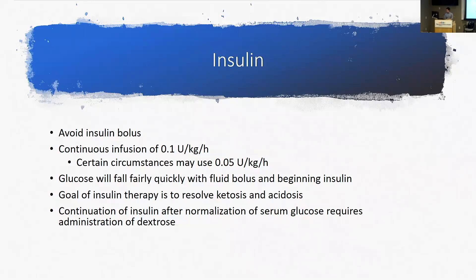The goal of insulin therapy is to resolve the ketosis and acidosis, not primarily to bring the glucose down. You're trying to shift the body's energy source from fatty acids and ketones back to glucose. As a result, glucose will fall, but that's not the aim. Importantly, glucose will correct before the acidosis corrects — so rather than decreasing insulin, the next step is adding dextrose to the fluids.